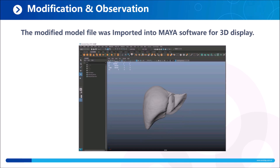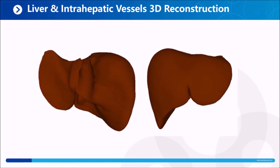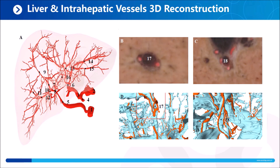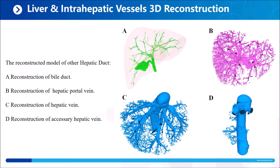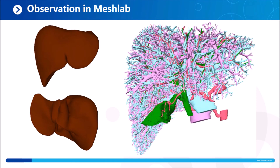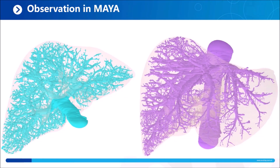The digital model was reconstructed and used for three-dimensional printing. The model was combined with Microsoft HoloLens mixed reality technology to reflect the complex relationships of intrahepatic systems, and the teaching of liver surgeons was carried out.